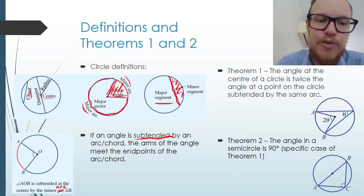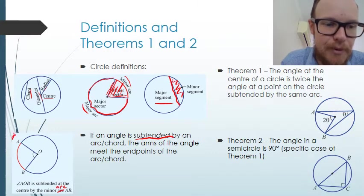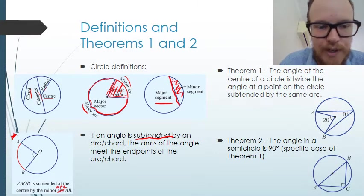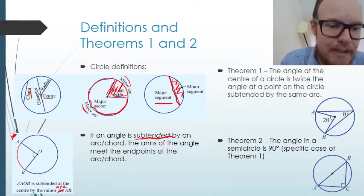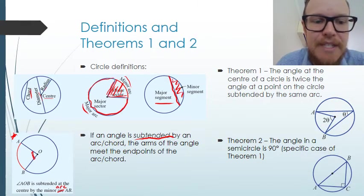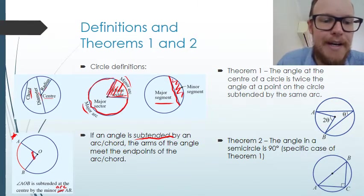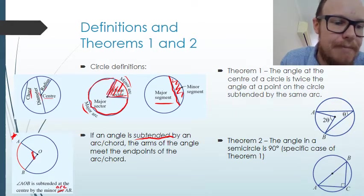It's all about the relationship. For example, angle AOB is subtended at the centre by the minor arc AB — meaning the angle here relates to the arc at the outside of the circle.